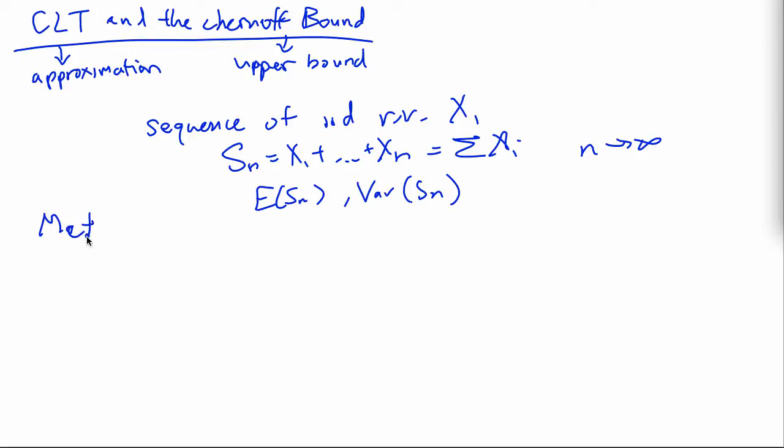So the first method we tried to alleviate this fact was to divide by n, which gave us the sample mean and this analysis led to the weak law of large numbers, which was a profound result.